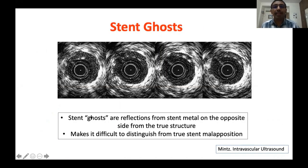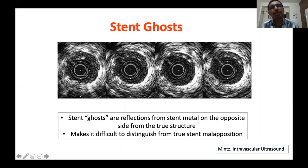Stent ghost artifact: reflections from stent metals from the opposite side that appear as true structures. You should not mistake this for true stent malapposition. This is a typical ghost artifact of stent struts — actually a reflection from the opposite side, not a true structure. Do not mistake it for stent malapposition. This completes the presentation of image interpretation.